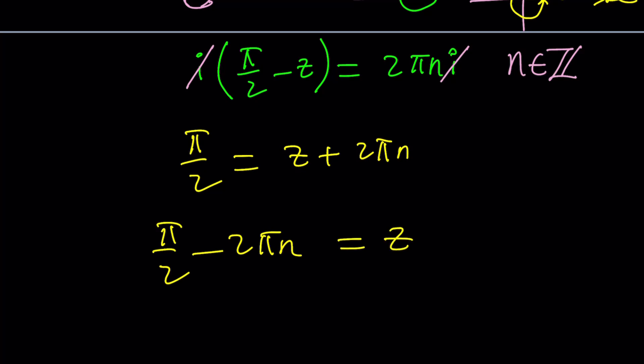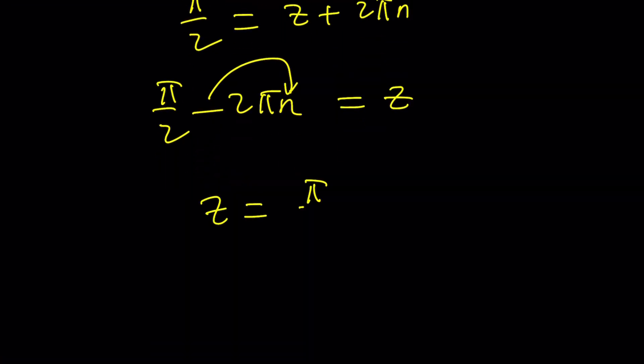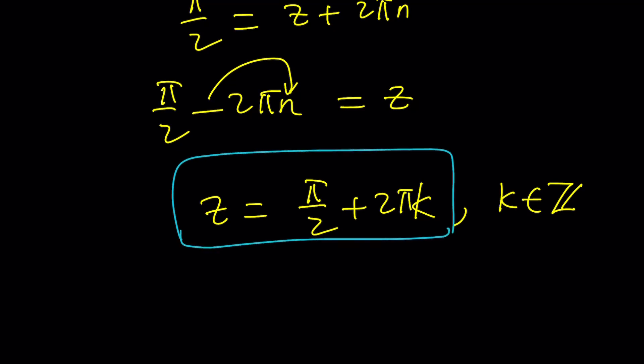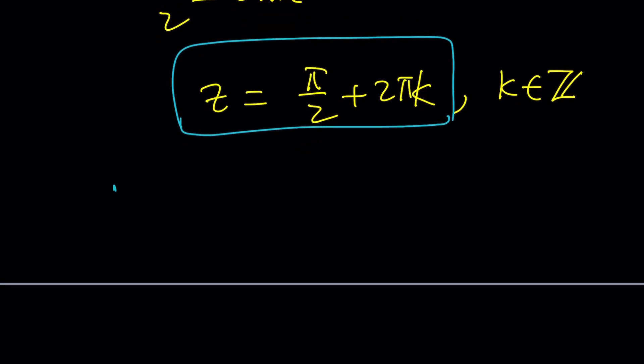So, I might as well just replace negative n with something like k, which is also an integer. And write the z as π/2 plus 2πk, where k is negative n or k is just an integer. Since n is arbitrary, k is also arbitrary. Make sense? So, this would be the answer in general form, which means our number is actually like a real number, right? z is real, isn't it? Okay, can you believe that? But, for example, if k is 0, z is going to be π/2. If k is 1, so on and so forth. You can find the answer.